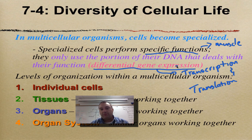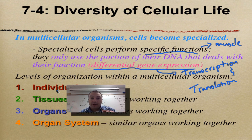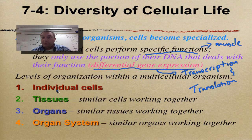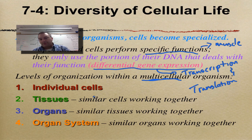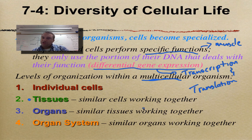Now we're going to cover something very simple that you probably learned in chapter one — characteristics of life. This only occurs in multicellular organisms. We start with individual cells: nerve cell, skin cell, whatever we talked about before. When a bunch of similar cells — skin cells, muscle cells, or nerve cells — are working together on a common function, that's called a tissue.